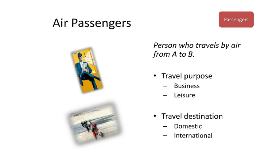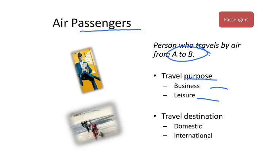Another very important stakeholder of the aviation industry are the passengers — those people that want to travel from A to B. If we look at why they travel, what can be called travel purpose, we differentiate between two types: business passengers and leisure passengers, and this will have an important influence when we define the product of an airline. If we look at destinations, we have domestic passengers and international passengers. The airport setup will not be the same for domestic versus international passengers, as international passengers need more checks for visa, passport, and so on.